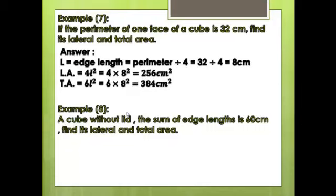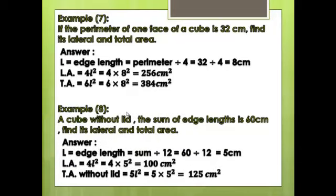Example 8: A cube without a lid means it has only 5 faces, not 6. The sum of all edge lengths is 60 cm. Find its lateral and total area. L = 60 ÷ 12 = 5 cm. Lateral area = 4L² = 4 × 5² = 100 cm². Since there is no lid, total area = 5L² = 5 × 5² = 125 cm².